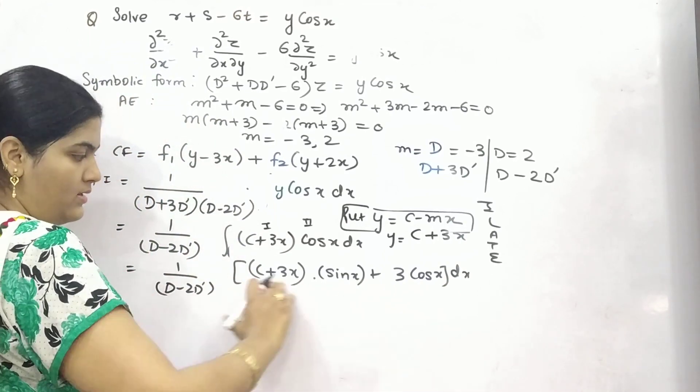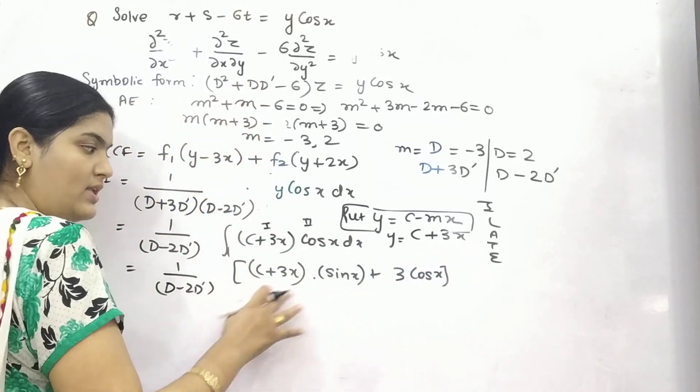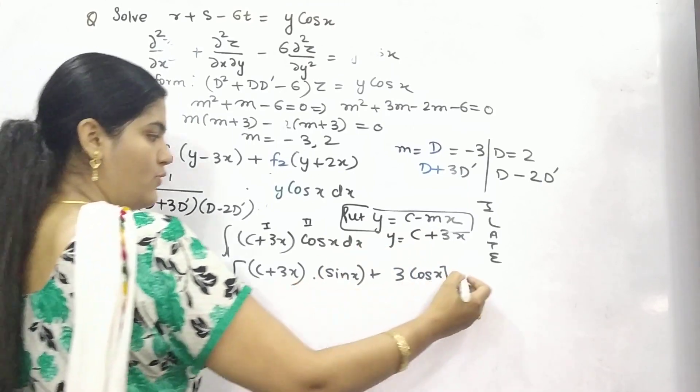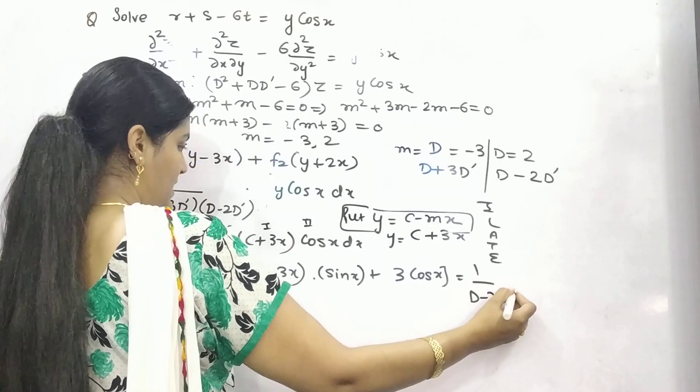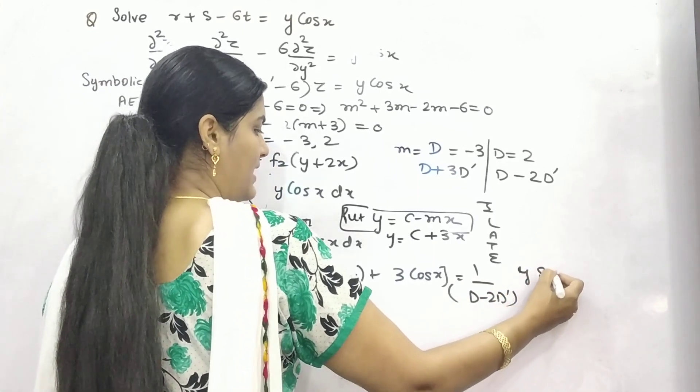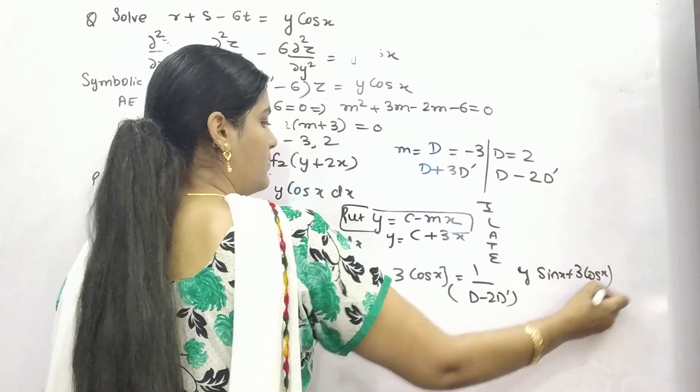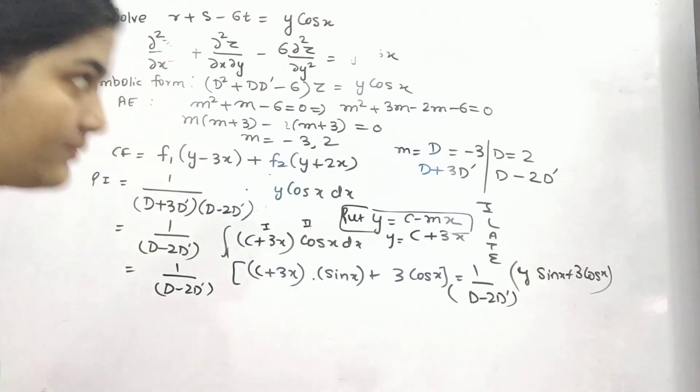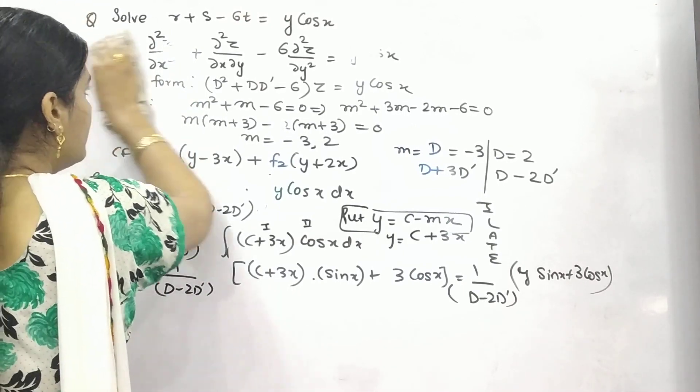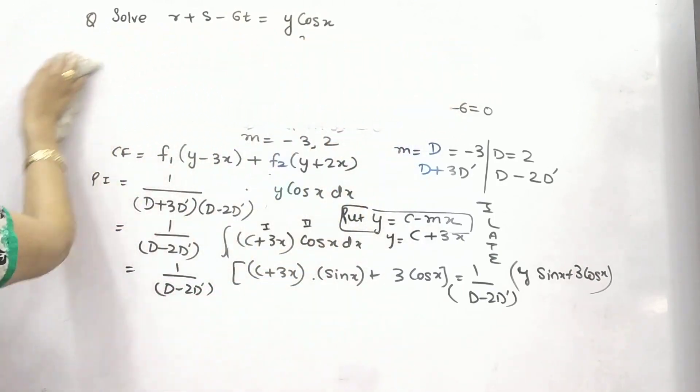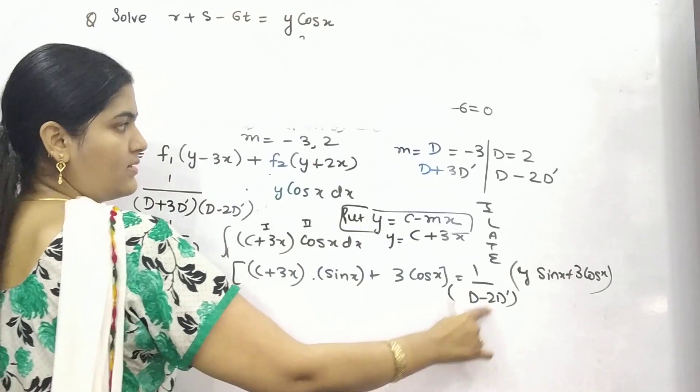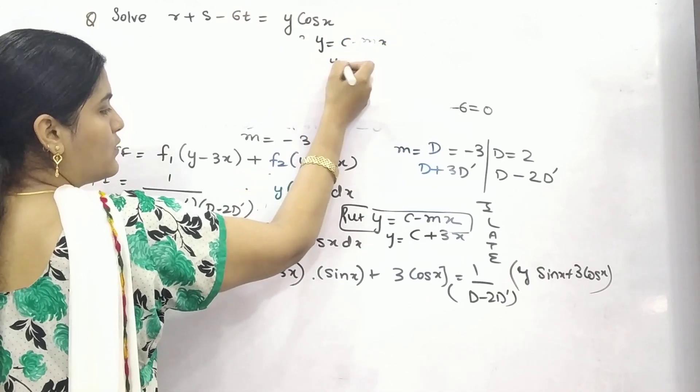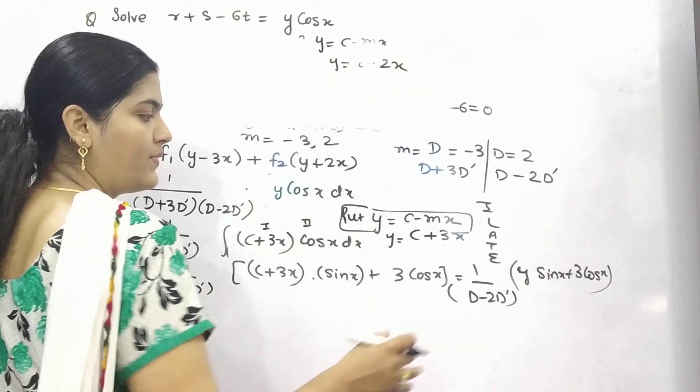This is your form. Now once you have done this, you have already solved dx. Once you will do this, you have to put again that value of c + 3x as y. So you can put it as (d - 2d')(y sin x + 3 cos x). Now again apply the same thing. Now your m is 2 here. So y is equal to c - mx, so c - 2x.